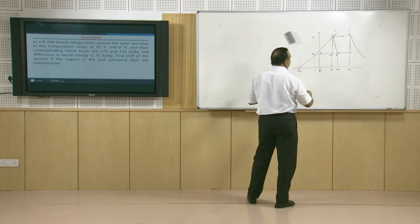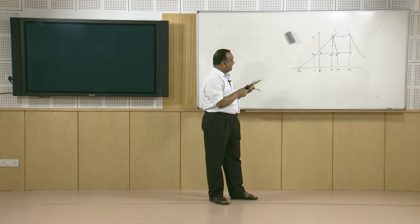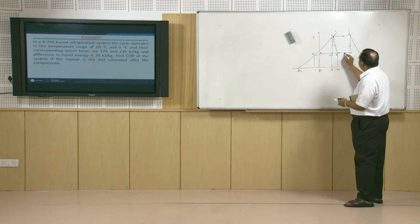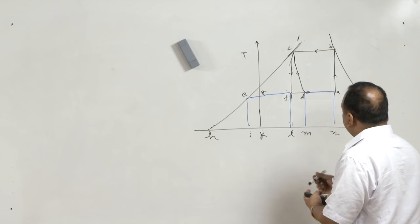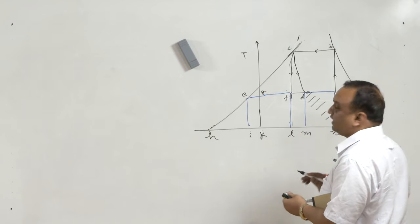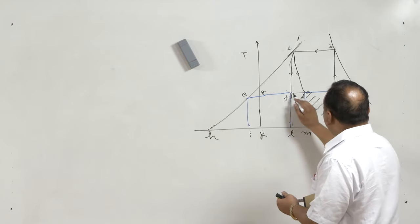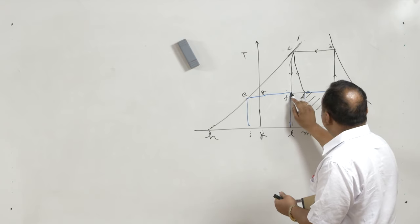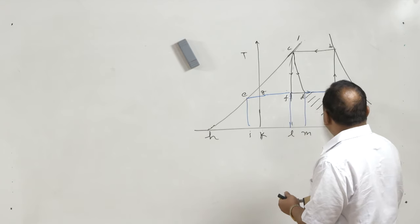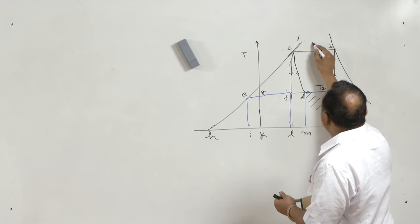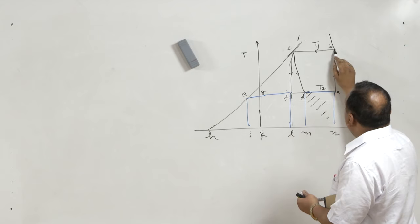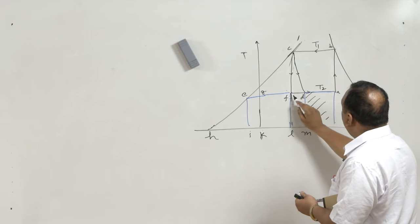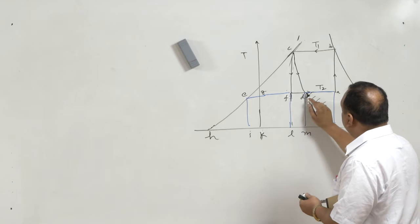Starting with the refrigerating effect, we will be getting the refrigerating effect during this process. The area representing this process will give us the refrigerating effect. We can find this area as S_B minus S_C — that is, entropy at this point minus entropy at this point — multiplied by temperature T2. But we do not have the value of the entropy change during the segment F to D; we have entropy of F and entropy of A, but not entropy at D.